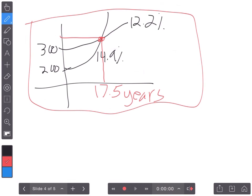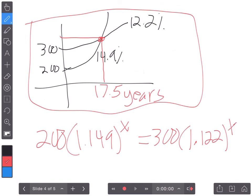So that's the process for solving the equation of 200 multiplied by 1.149 to the exponent of x being equal to 300 times 1.122 to the x. And we solve that equation for x by getting what's called a common base. So what you should do, folks, is go over this video if you need to step-by-step.